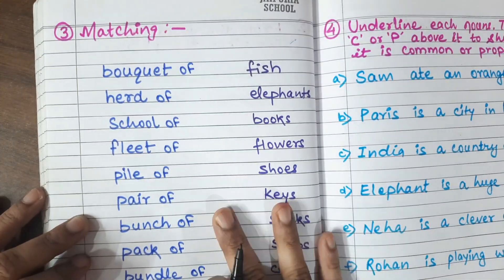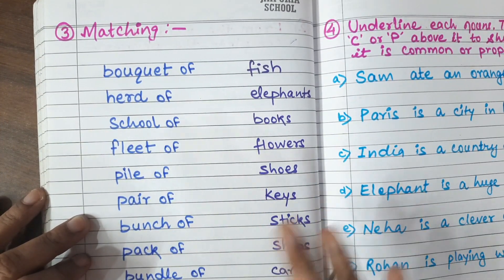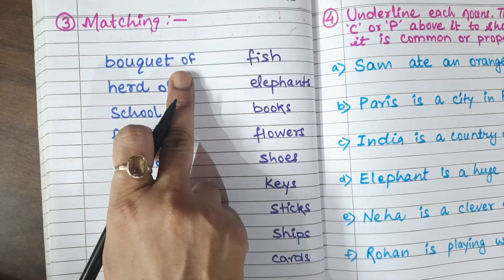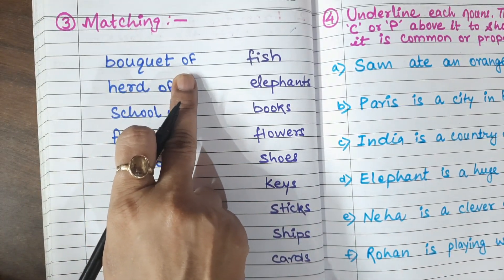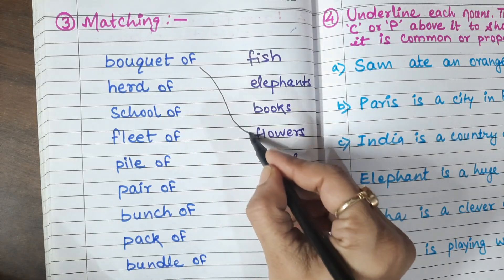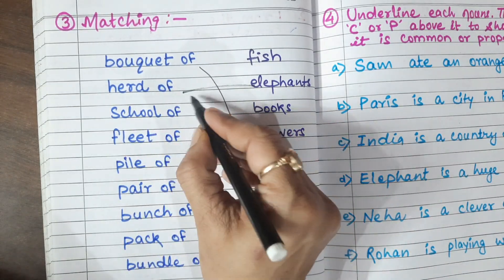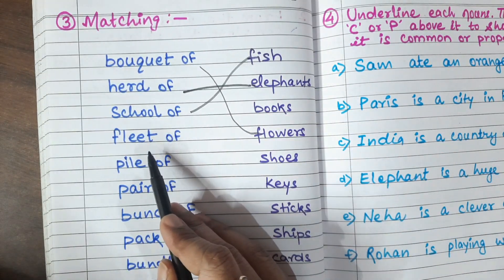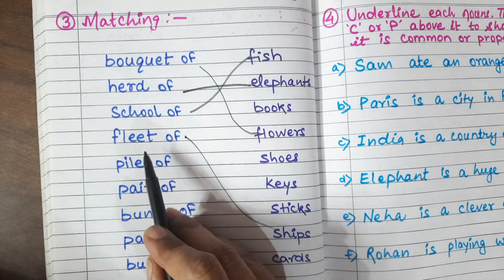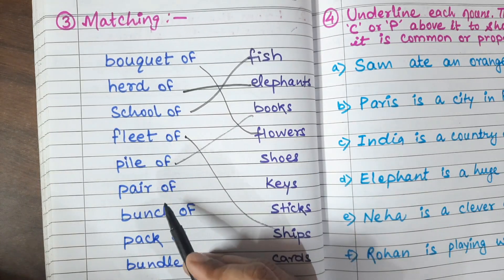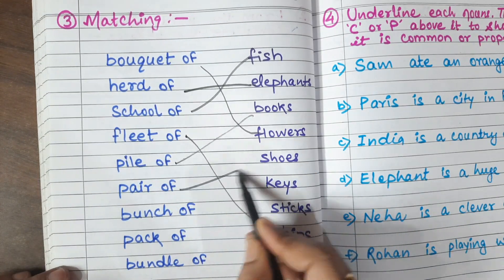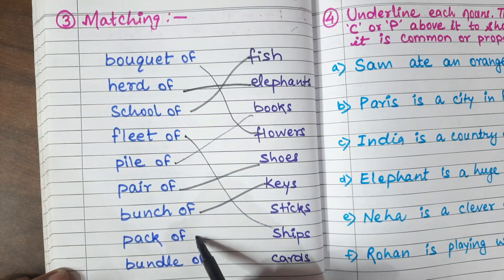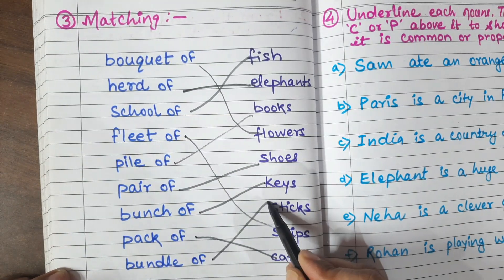Now, matching — collective noun revision. You can also do matching for collective nouns. Like, a bouquet is used for flowers, so match with flowers. A herd of elephants. School of fish. Fleet of ships. Pile of books. Pair of shoes. Bunch of keys. Pack of cards. Bundle of sticks.